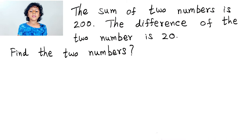So the word problem is the sum of two numbers is 200, the difference of the two numbers is 20. Find the two numbers.